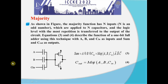The first technique is the majority function. As shown in the figure, the majority function has N inputs which are applied to N capacitors and the logic level with the most repetition is transferred to the output of the circuit. Equations 3 and 4 describe the function of a one-bit full adder using this technique, which takes A, B, and C as inputs and produces sum and carry as outputs.